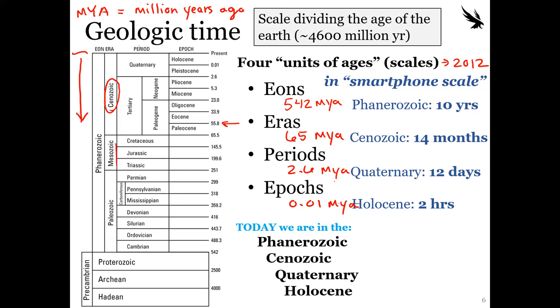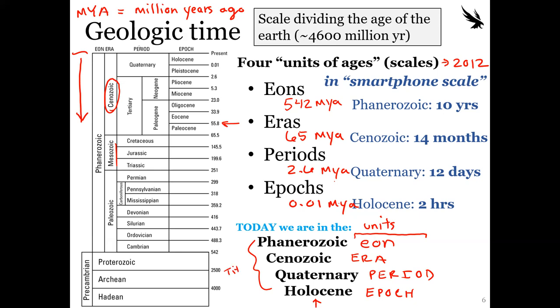If you work with geologists, knowing these terms helps you communicate effectively. For example, 'Quaternary period sands in Florida' have a specific type of deposition, so when a geologist refers to a quaternary sand, you know they're talking about relatively younger sediment from the Pliocene or Holocene. Engineers don't need to specialize in geology, but we do need to communicate with geologists effectively.